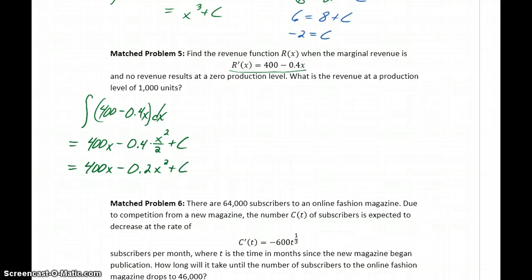So again, we have a general equation here for our revenue function. Our revenue function will be 400x minus 0.2 x squared plus some constant c, and what we need to figure out is what this constant value is.